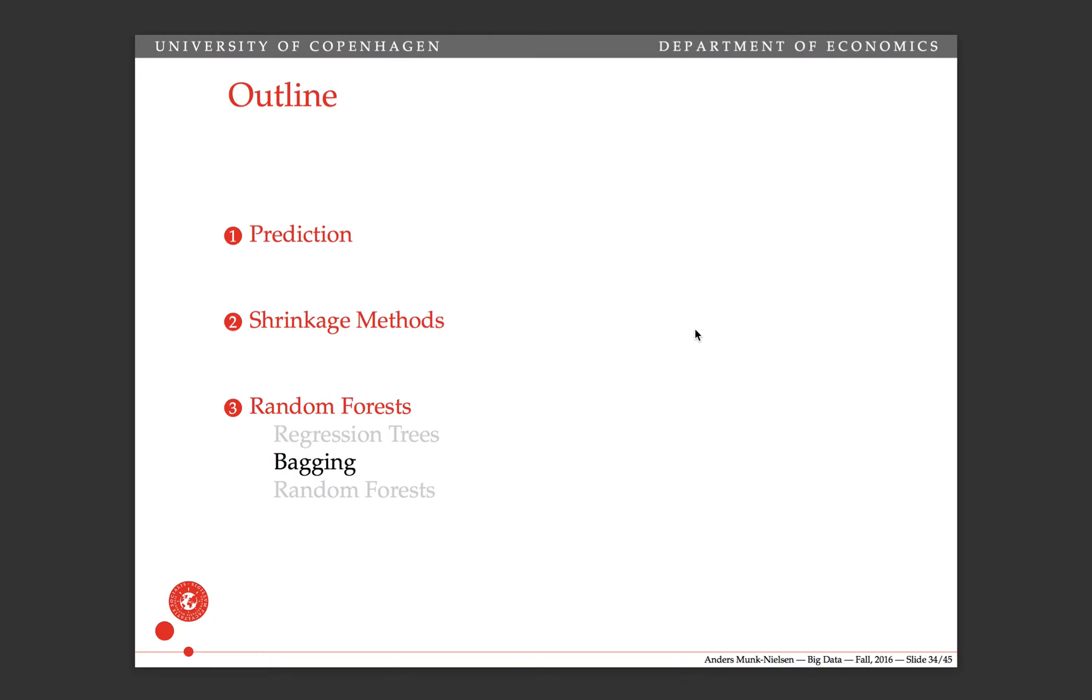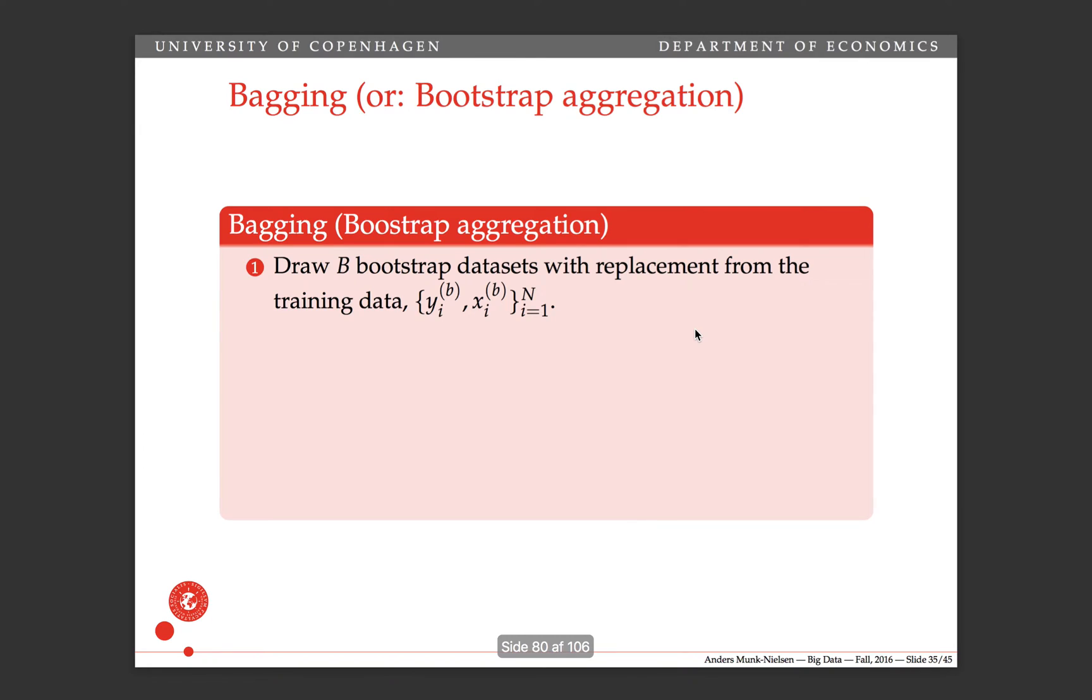In this video, I'm going to talk about bagging. It's the second component of how random forests work, but it's actually a technique that can be used for many other types of estimators. Alternatively, you can refer to bagging as bootstrap aggregation. Hopefully, it'll be clear in a minute why that is.